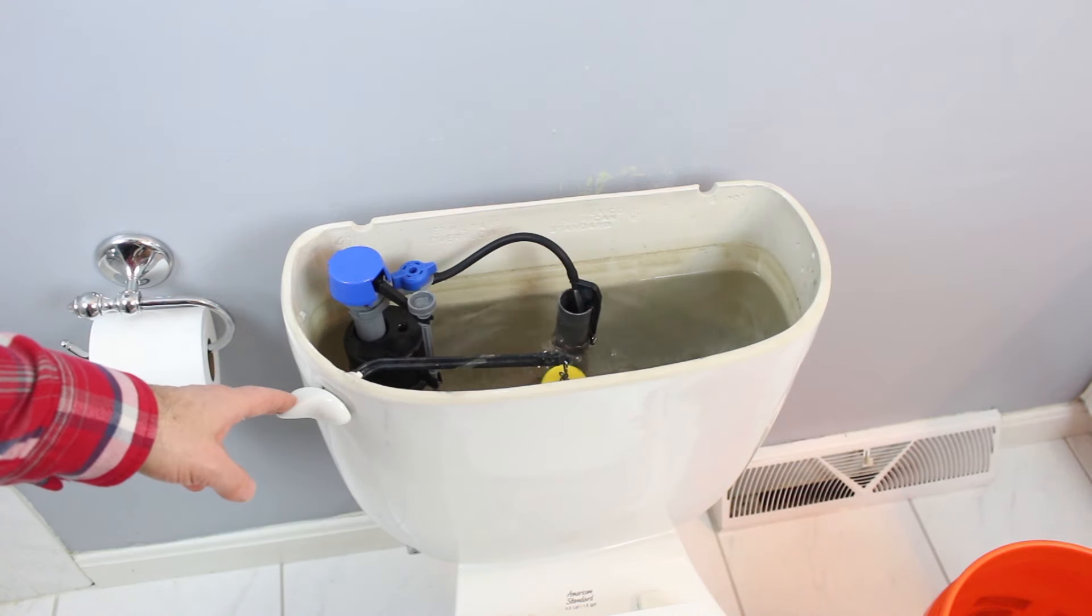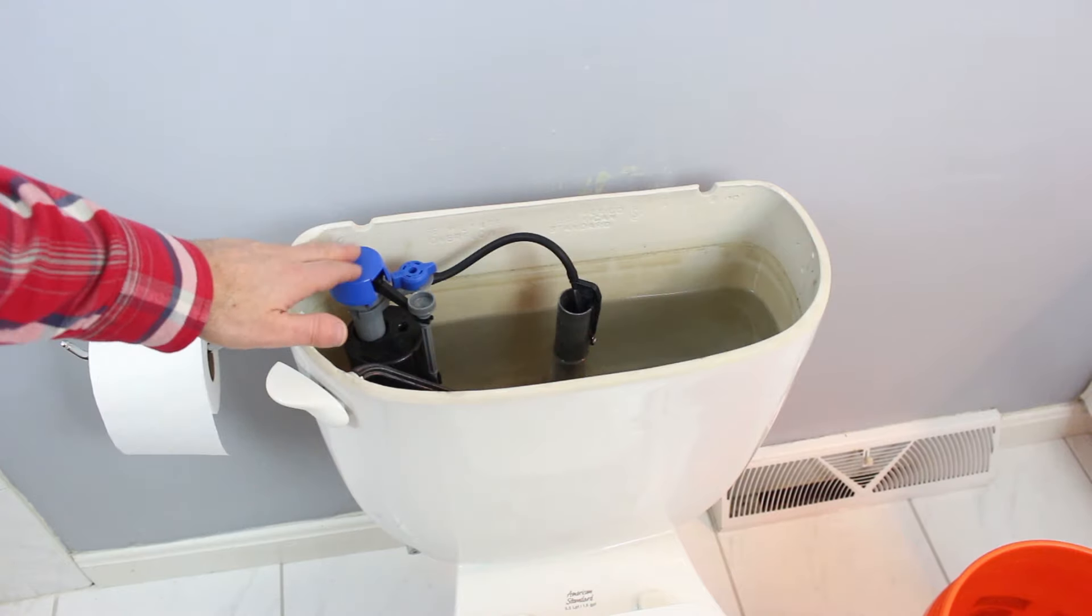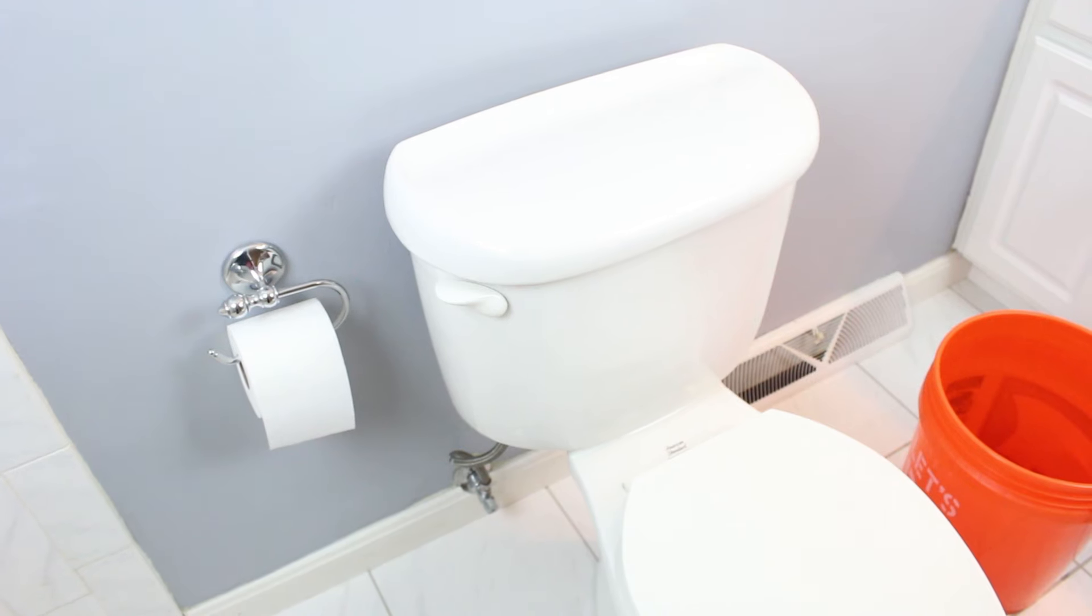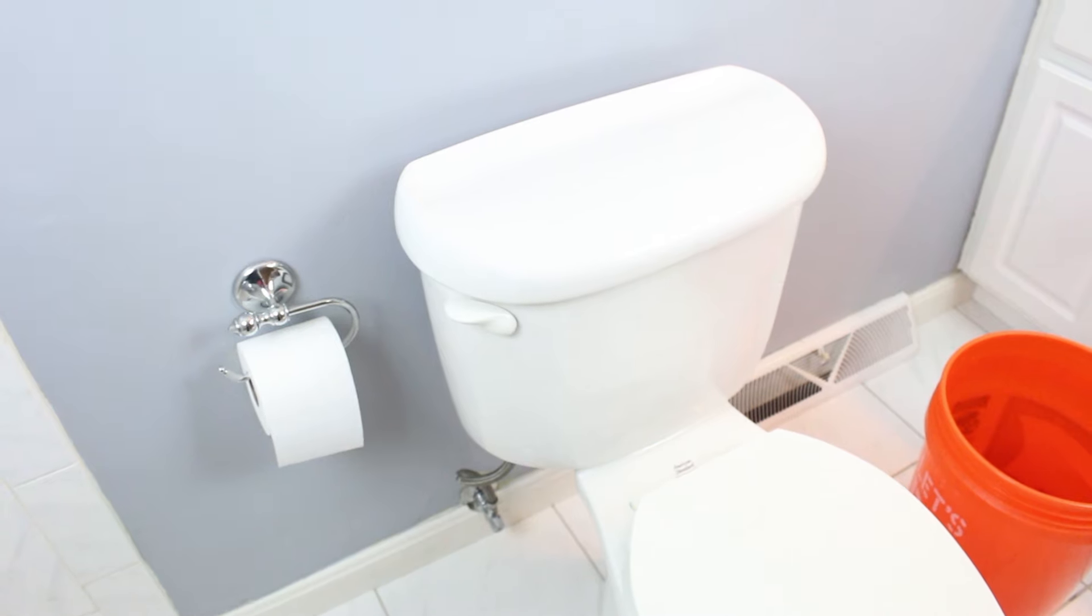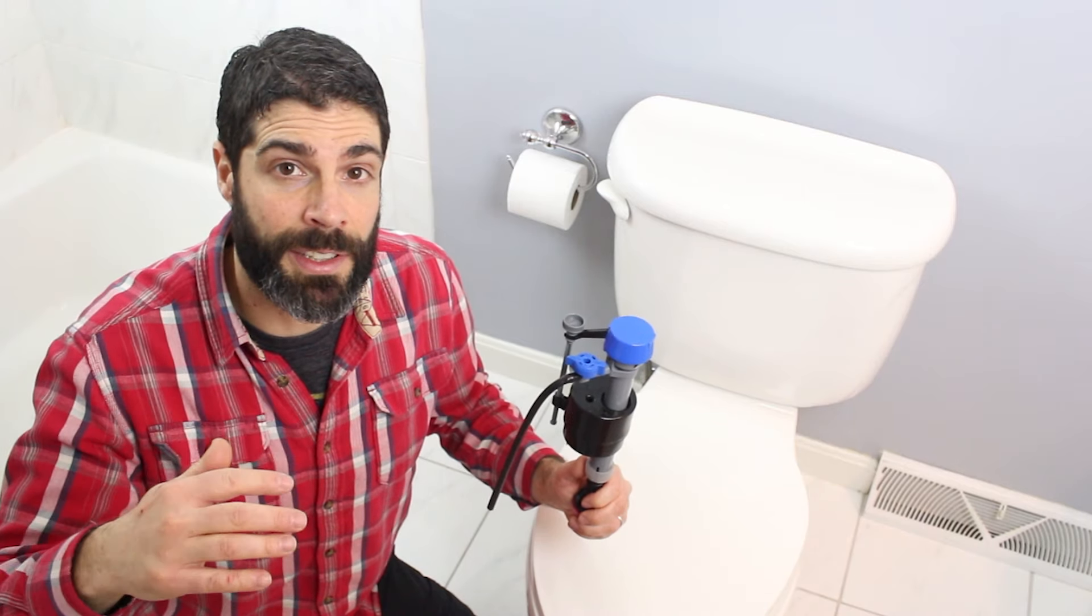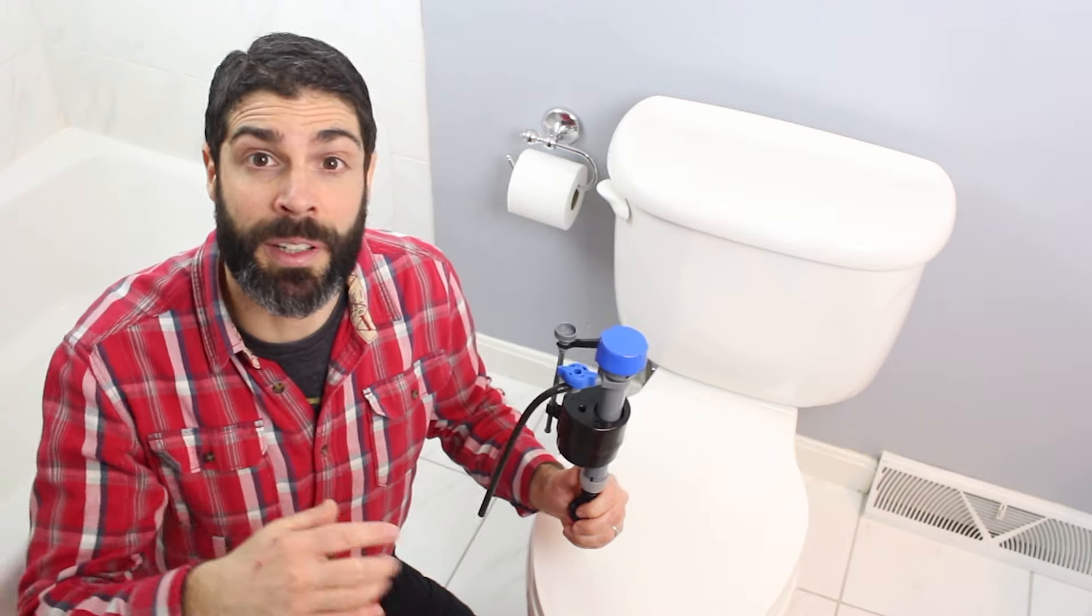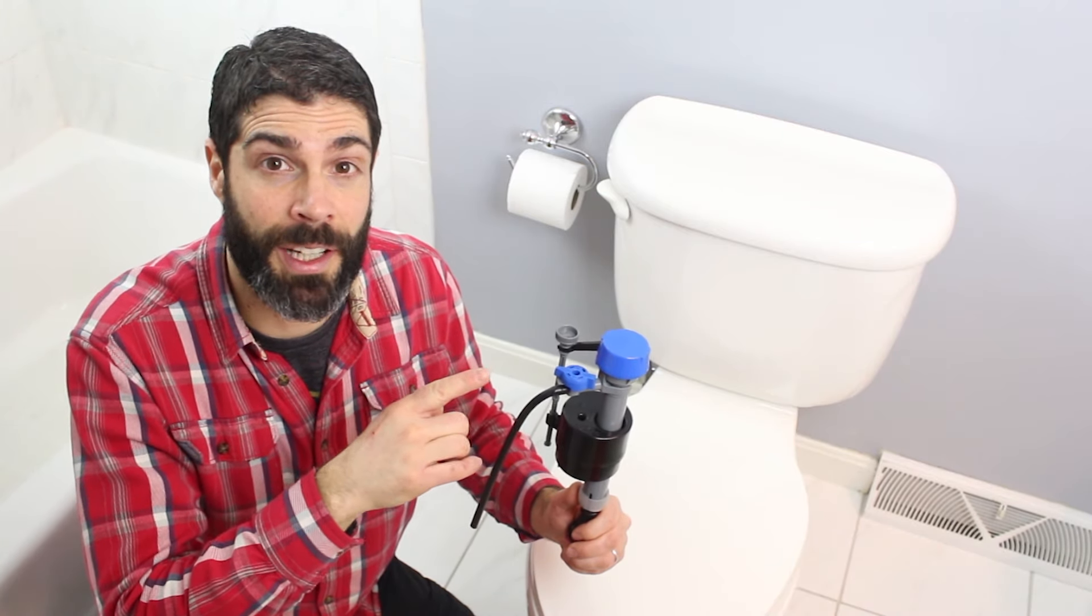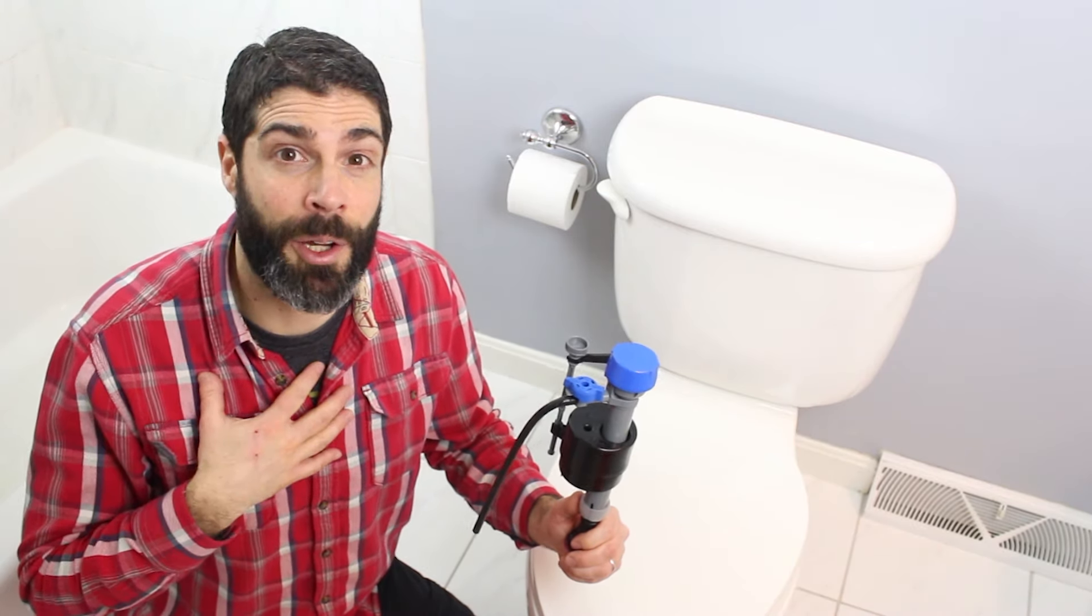It should only take 10 to 15 minutes to install this new 400H fill valve, and it'll make your toilet run a lot quieter and have a more powerful flush. All the supplies that we use for this tutorial are down in the description. If you have any questions about FluidMaster's 400H, feel free to ask. I'm happy to help you out.